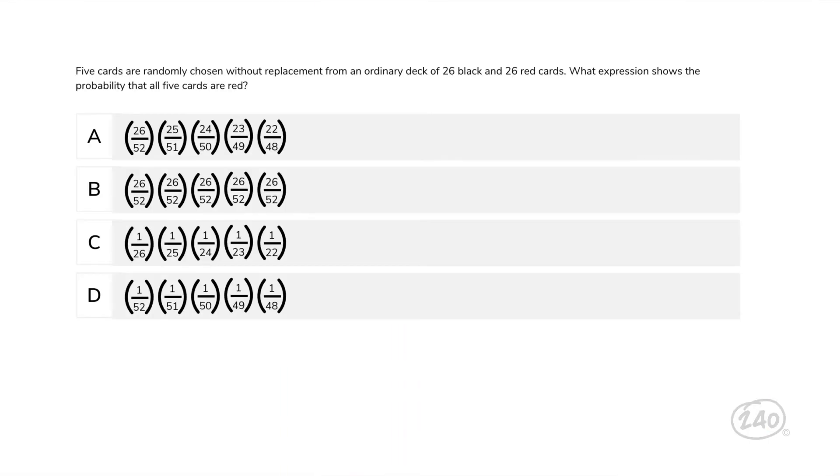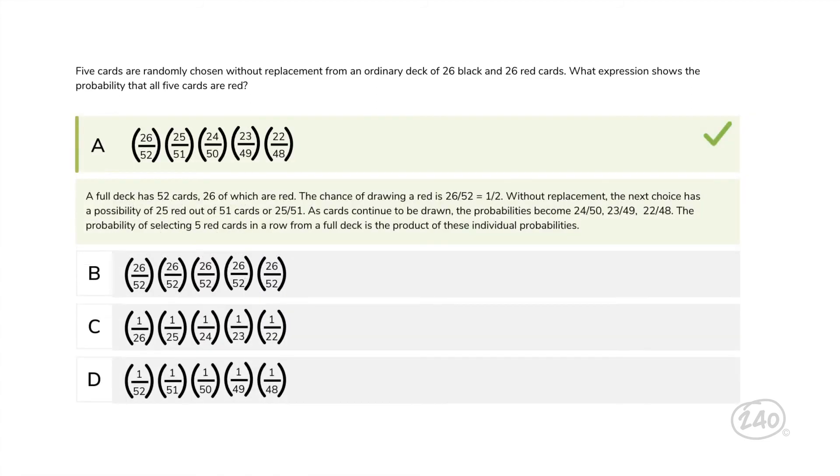How about a probability question? What do those look like? Five cards are randomly chosen without replacement from an ordinary deck of 26 black and 26 red cards. What expression shows the probability that all five cards are red? The first time we pull a card, we have a 26 out of 52 chance of it being red. So right away, we can eliminate choices C and D. When we go to pull our second card, the number of red cards and total cards in the deck has decreased. So now we have a 25 out of 51 chance of pulling a red card. Choice A is correct. Each time a card is drawn, the probability changes.